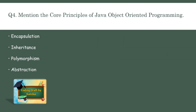The next question is: mention the core principles of Java object-oriented programming. The four principles are encapsulation, inheritance, polymorphism, and abstraction. Encapsulation means wrapping data, variables, and methods together as a single unit.